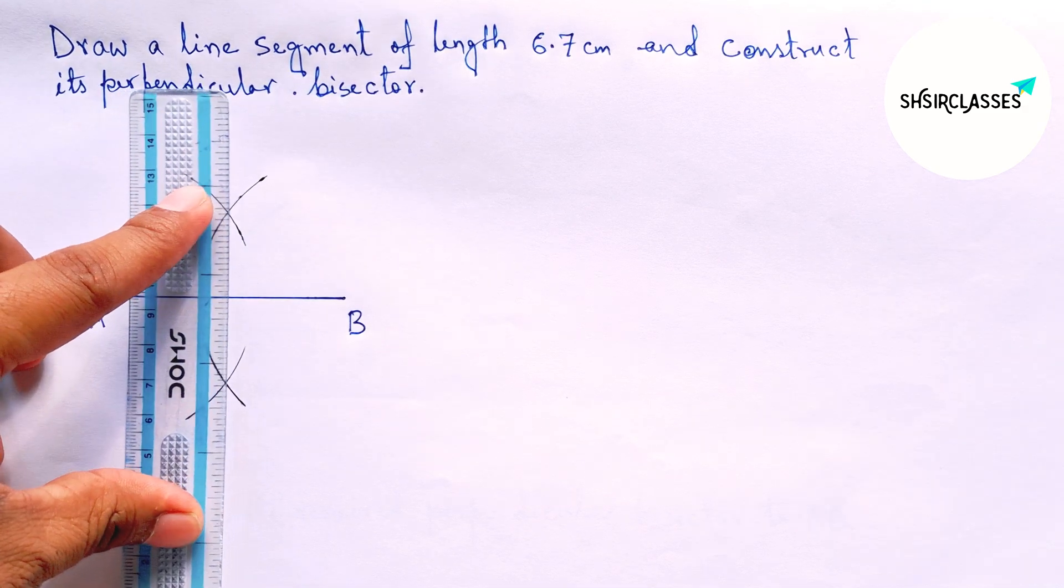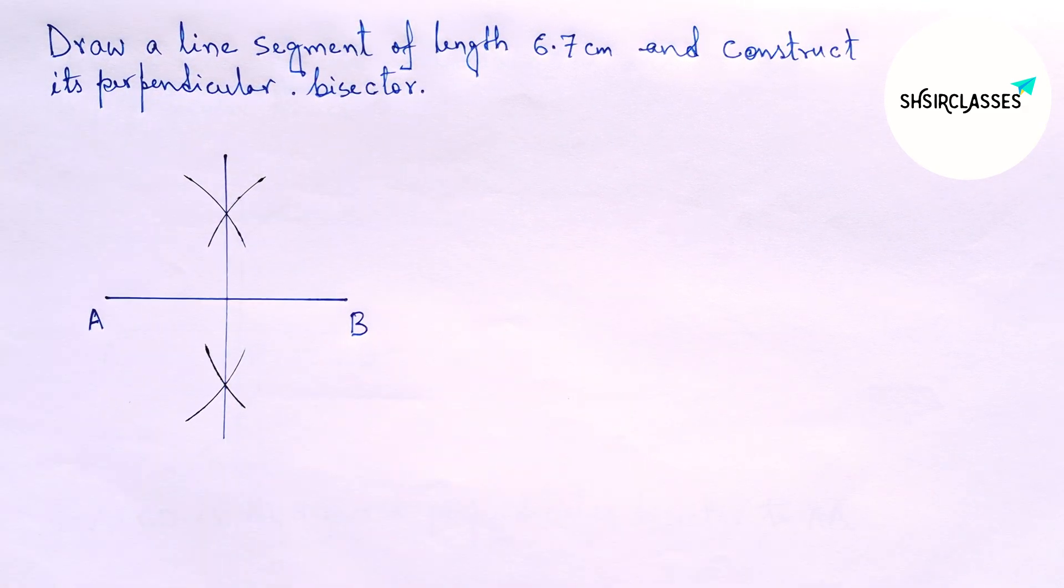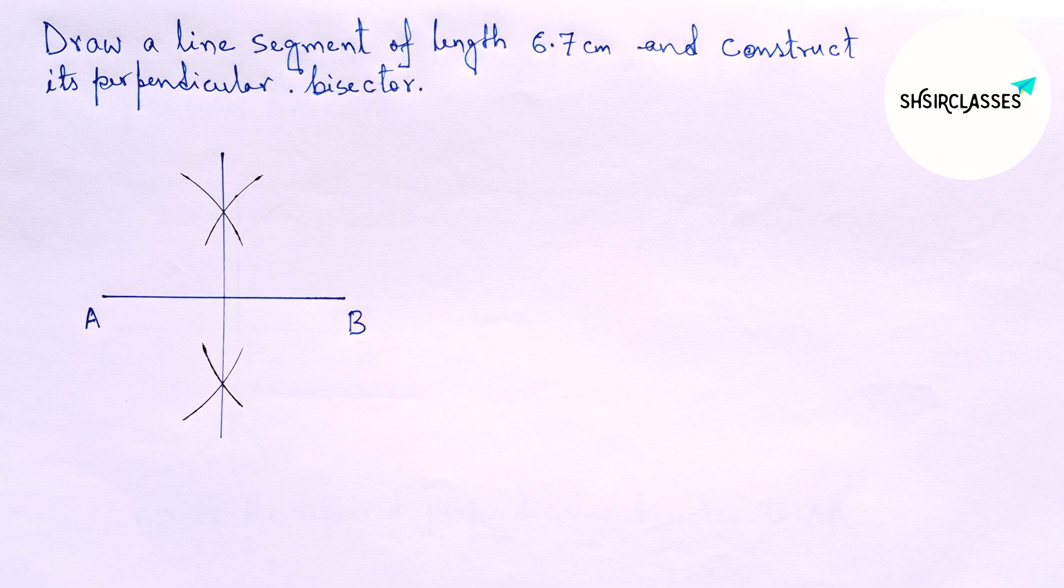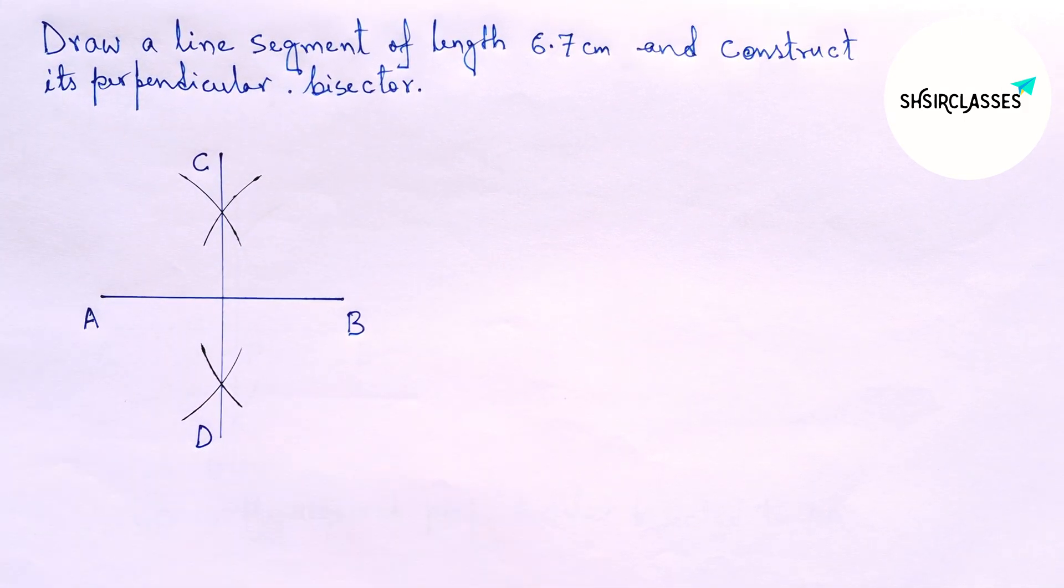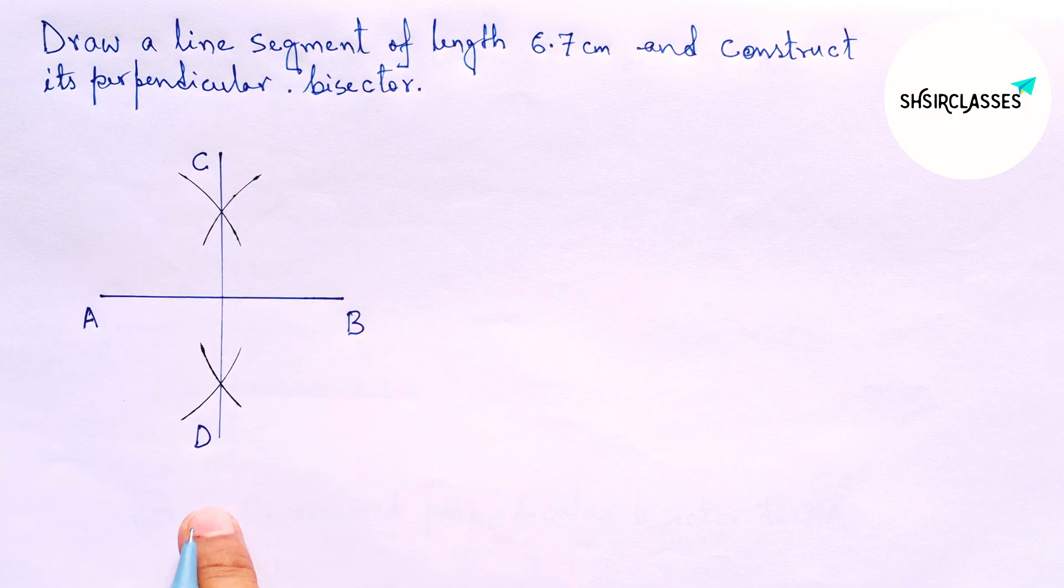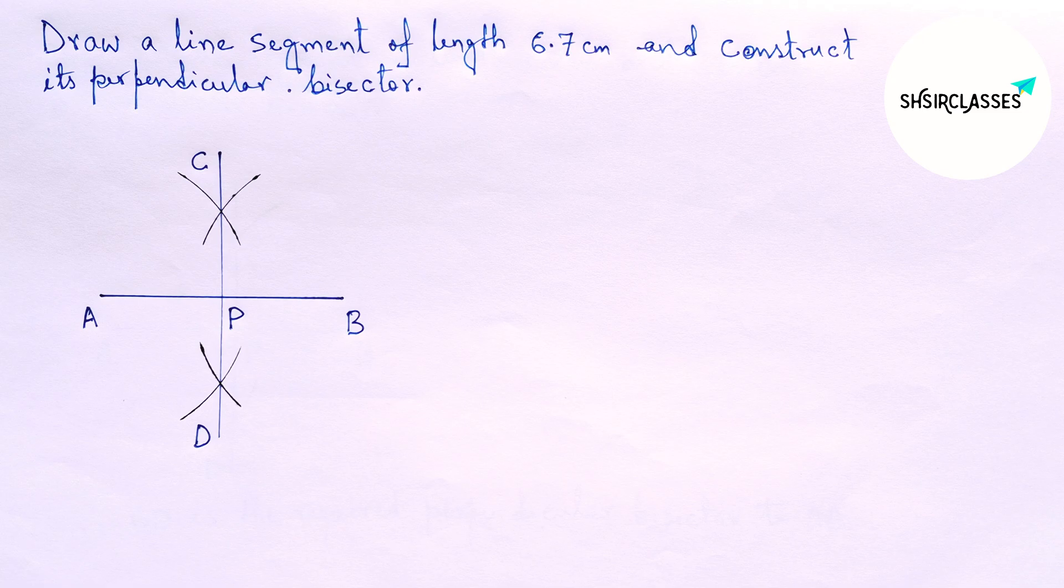Okay, now join these points and this is the required perpendicular bisector. Label it C and D. AB and CD intersect at a point. Label this point P.